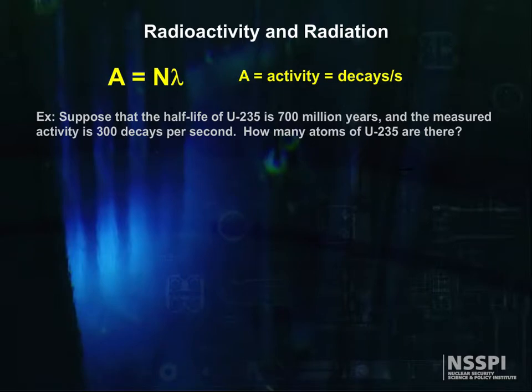First, we need to convert half-life to the decay constant. Let's see. Oh yeah, we know that lambda is equal to 0.693 divided by the half-life.